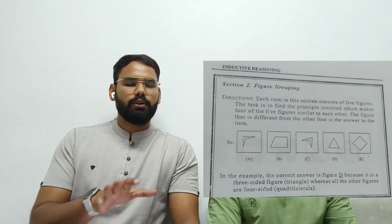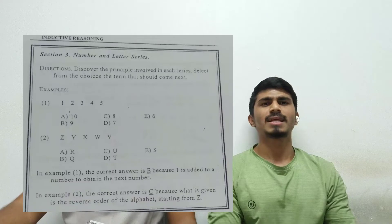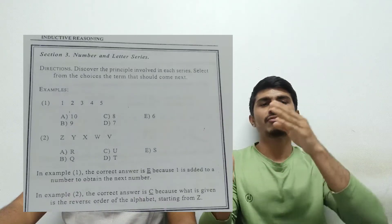In figure grouping, you will get a group of four figures and you have to identify the odd one out — the image that does not belong with the others. You need to think carefully and find the one image that is different from all the rest.